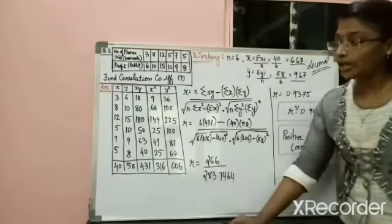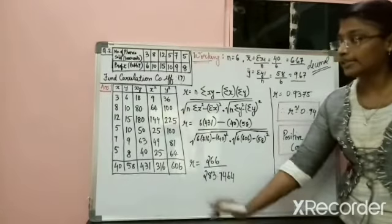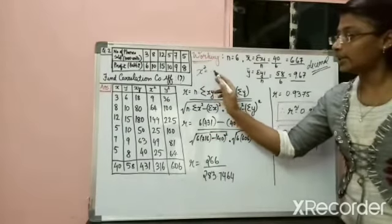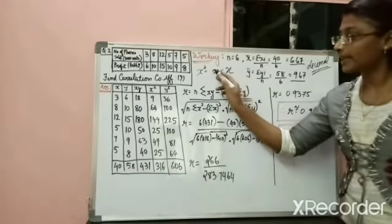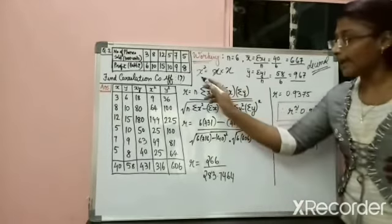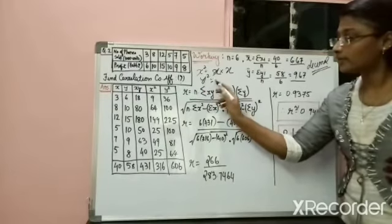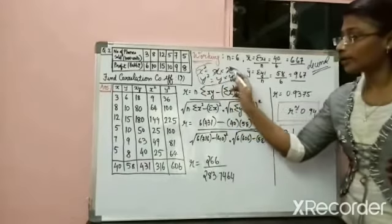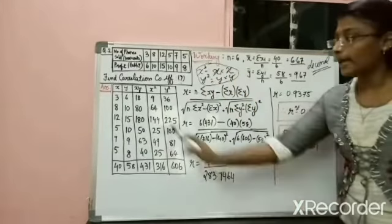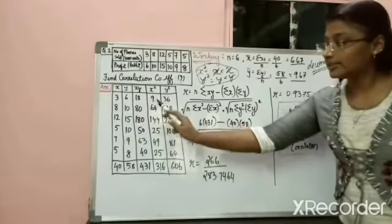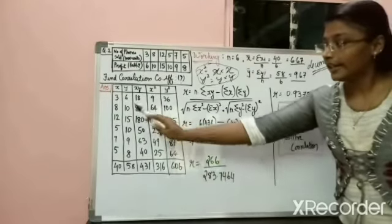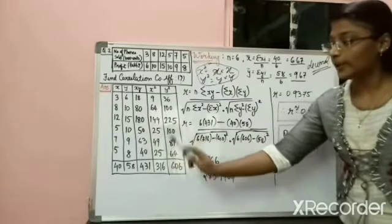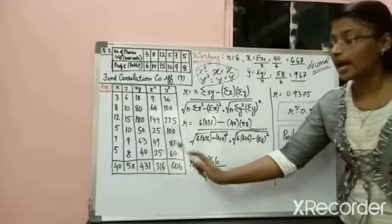The second column is x². x² means x multiplied by x. So 3 × 3 = 9, 8 × 8 = 64, 12 × 12 = 144, 5 × 5 = 25, 7 × 7 = 49, 5 × 5 = 25.